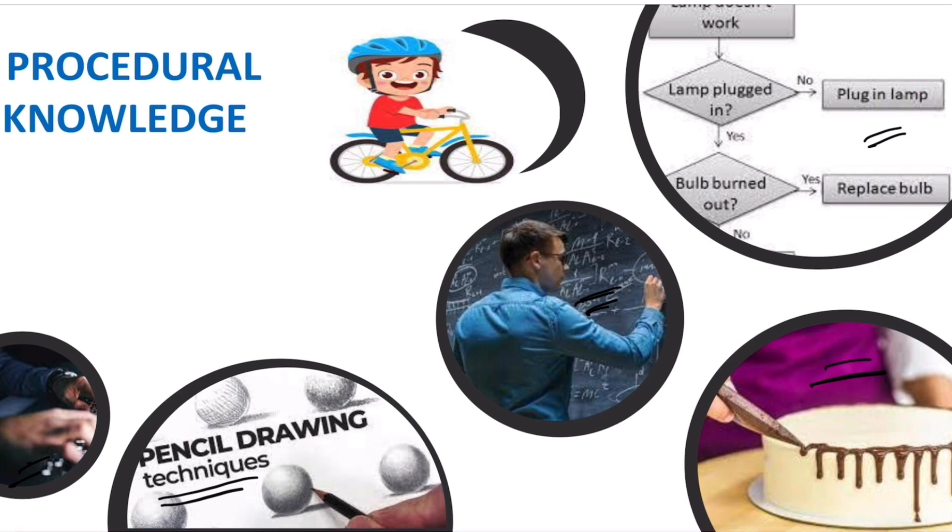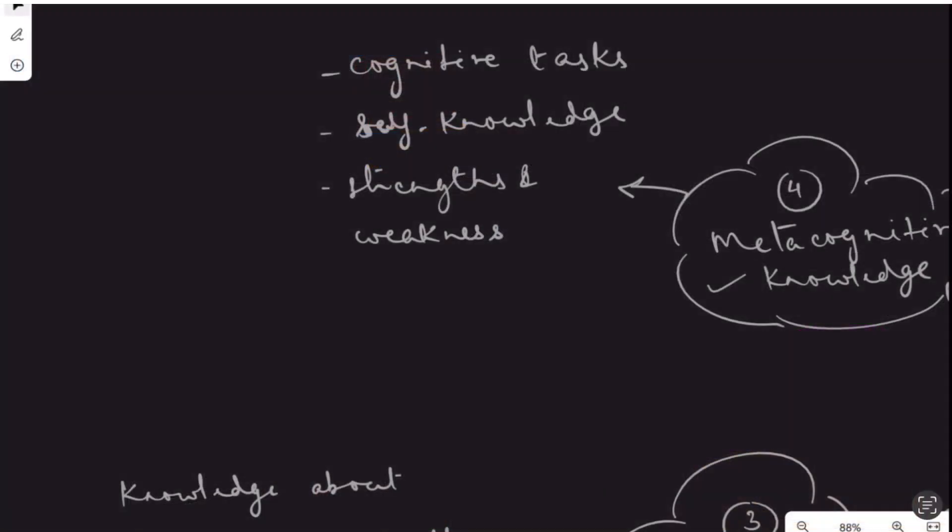The last one is metacognitive knowledge. Metacognitive knowledge is strategic knowledge related to one's own thinking process. It means knowing how to use one's own strengths and weaknesses as a learner, reflecting on our own learning process, and setting goals for our own improvement. This knowledge about ourselves and our learning falls under metacognitive knowledge.